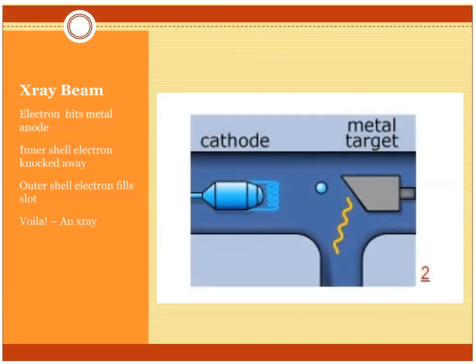An x-ray beam is generated like this: you have a cathode, and it is heated up, and it gives off an electron. The electron flies across and hits a metal target. When it hits the metal target, an electron from an inner shell is knocked out, and then an outer shell electron drops into that inner shell. When it does that, it loses energy, and the energy is given off. The energy will fly out through the body and hit on the other side onto a little collecting device. That is how an x-ray is created.